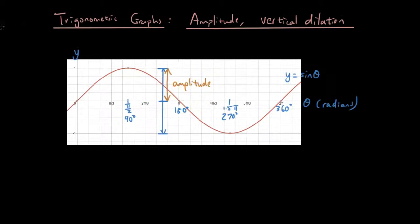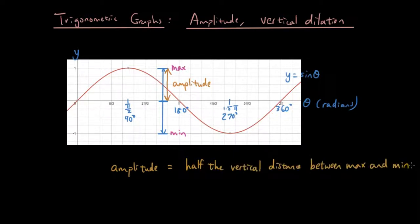Basically if you get the maximum vertical point and the minimum vertical point, you get the distance between those two points and divide it by 2, then you get the amplitude. Therefore you can say the amplitude is half the distance, half the vertical distance between the maximum and the minimum.